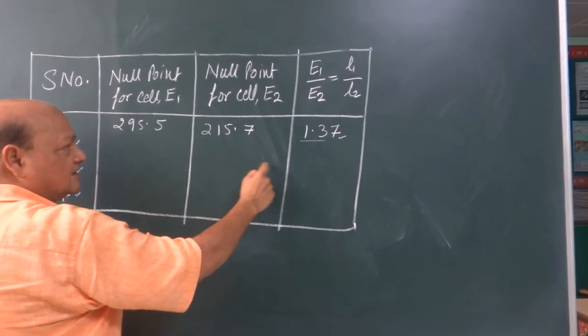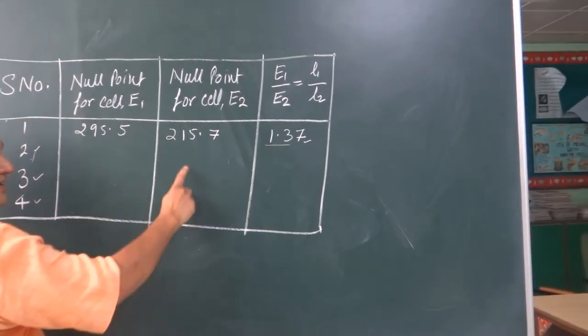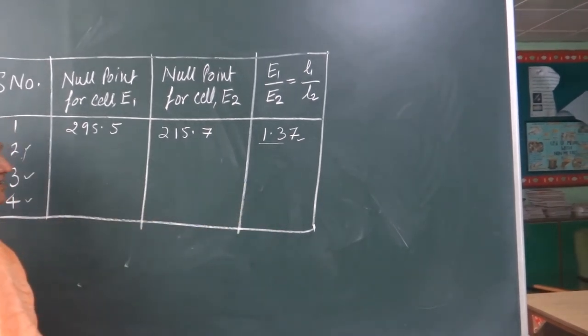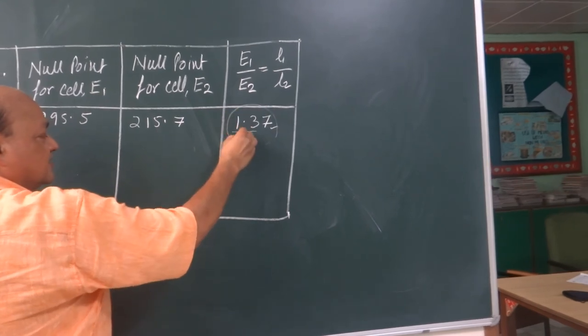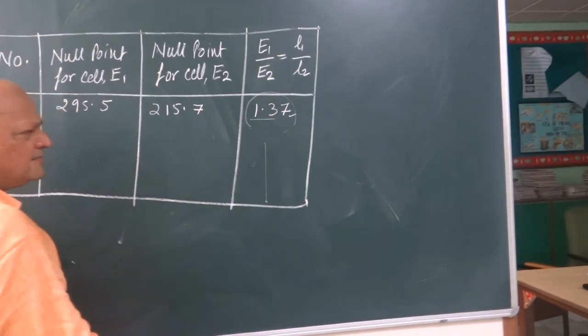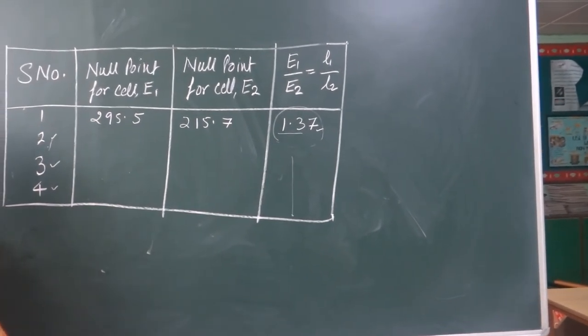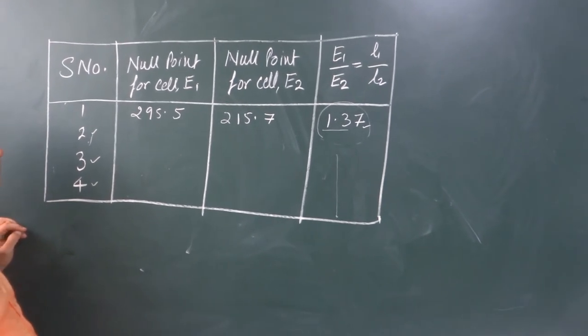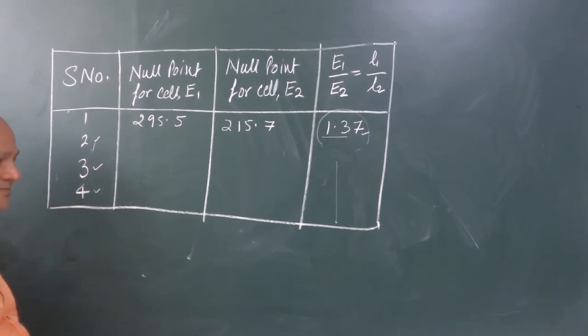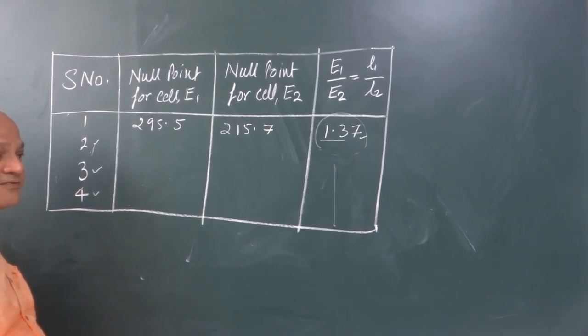And find the ratio. When you find the ratio for all readings, it should come out approximately the same. There may be a variation of say 0.1 or 0.2. That's how you can do the experiment for comparing EMF of two cells.